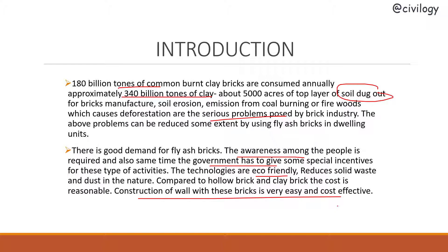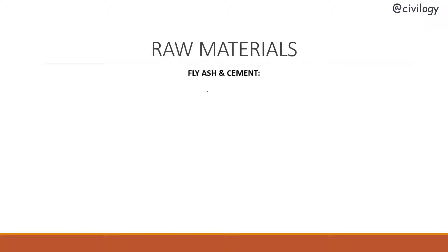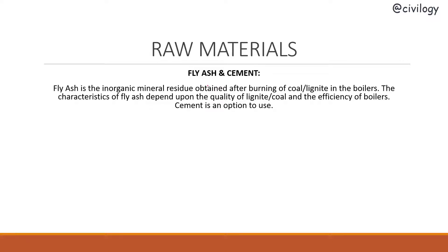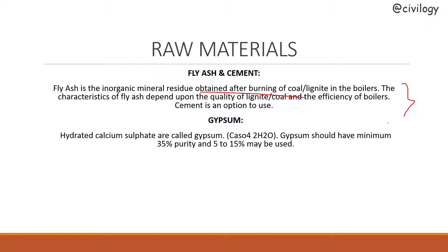Fly ash is an inorganic material residue obtained after burning of coal or lignite in boilers. The characteristic of fly ash depends mainly on the quality of lignite and coal and the efficiency of boilers. Cement is an option to use in the manufacturing process — you can use only fly ash or both fly ash and cement.